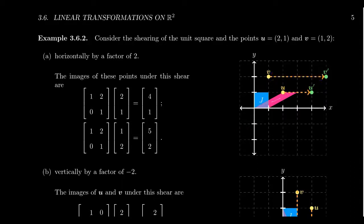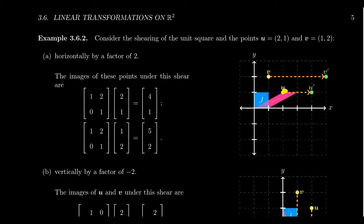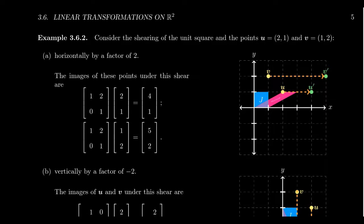Now let's see what happens to the unit square. The standard unit square has points (0,0), (1,0), (0,1), and (1,1). This shearing map will turn it into a parallelogram. The things on the x-axis don't move during a horizontal shear, so (0,0) and (1,0) stay put. The point (0,1) moves to (2,1), and the point (1,1) moves to (3,1). That's an example of a horizontal shear turning the square into a parallelogram.